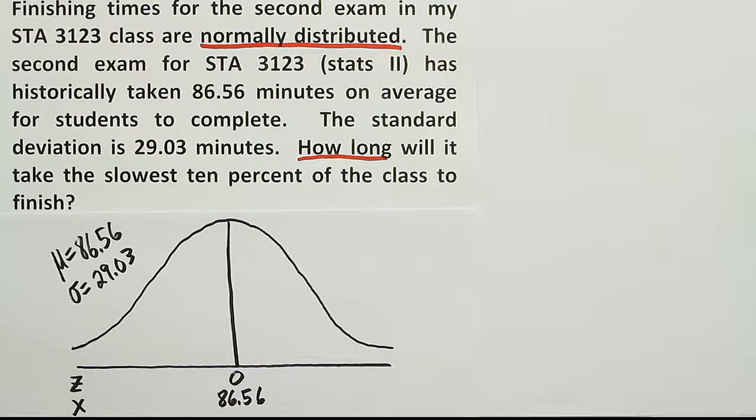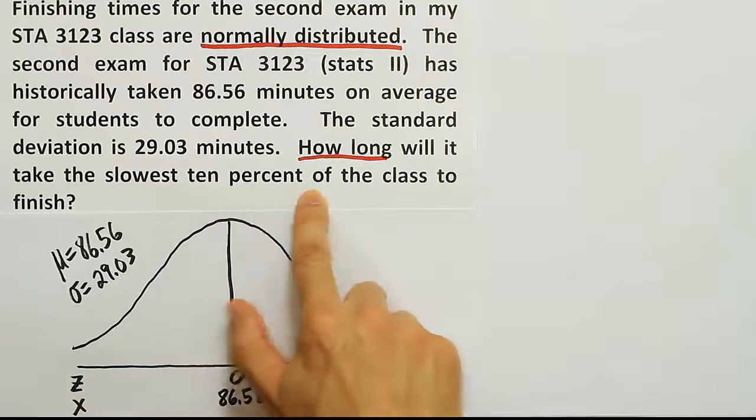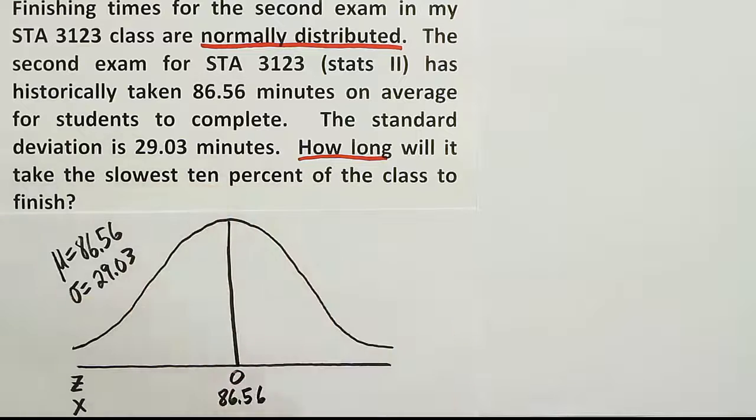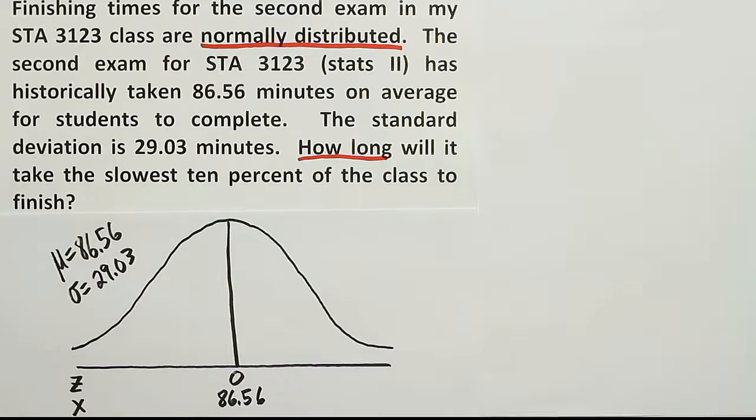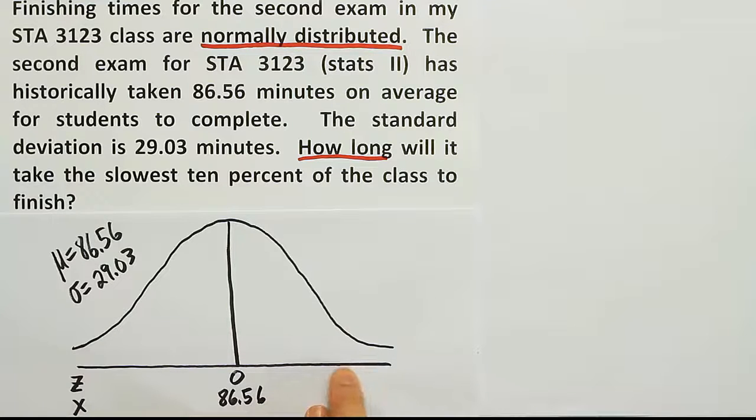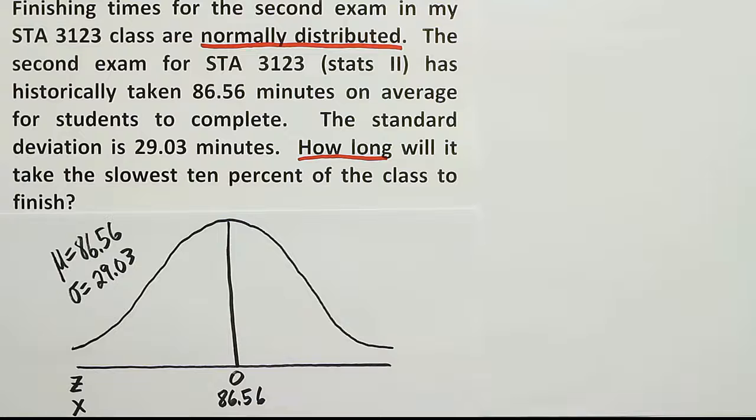So when a problem does that, when it doesn't ask for probability, but it's still using the bell curve, and they're asking for something like a finishing time, and then they go on to talk about a percentile or a percentage, we know that we're going to use the table in reverse. So we're going to be going to the table to look up an area in order to find a z-score. And that's kind of the opposite of what we did before. Before, we might be given a score like 120, so it might be a finishing time like 120. We then converted that 120 into a z-score, and then we went and looked up the z-score to find an area, and the area was our solution. That's not what we're doing in this problem.